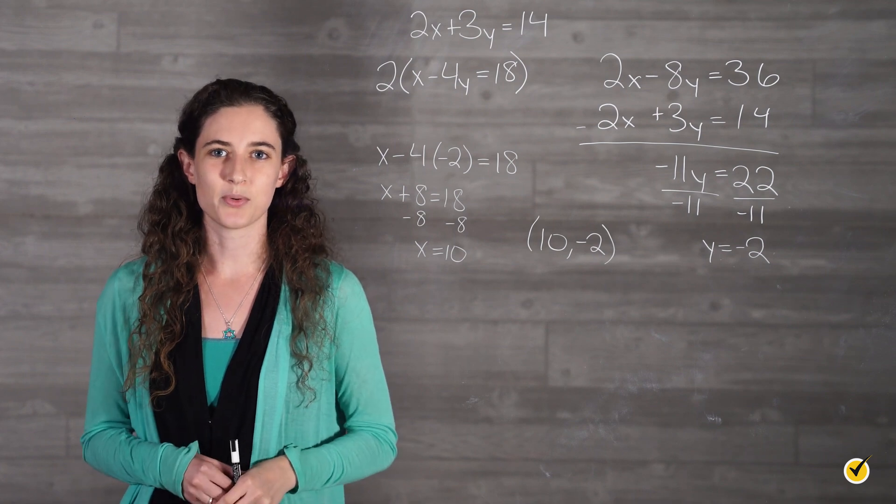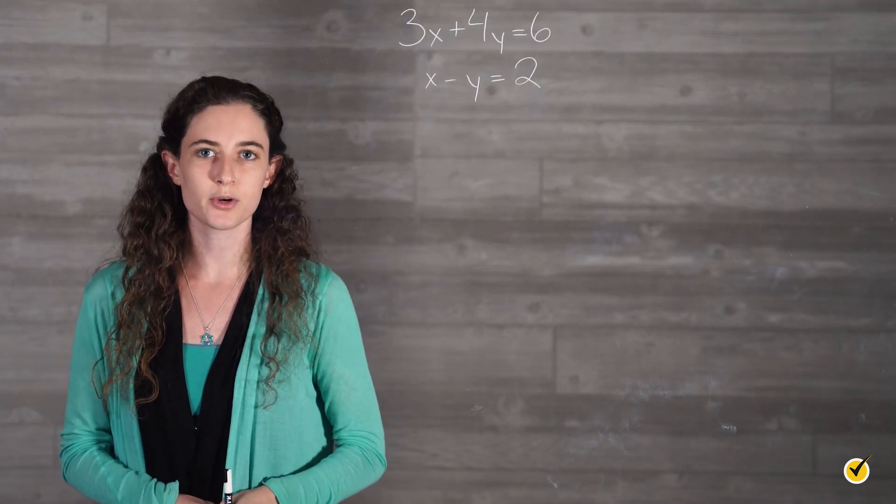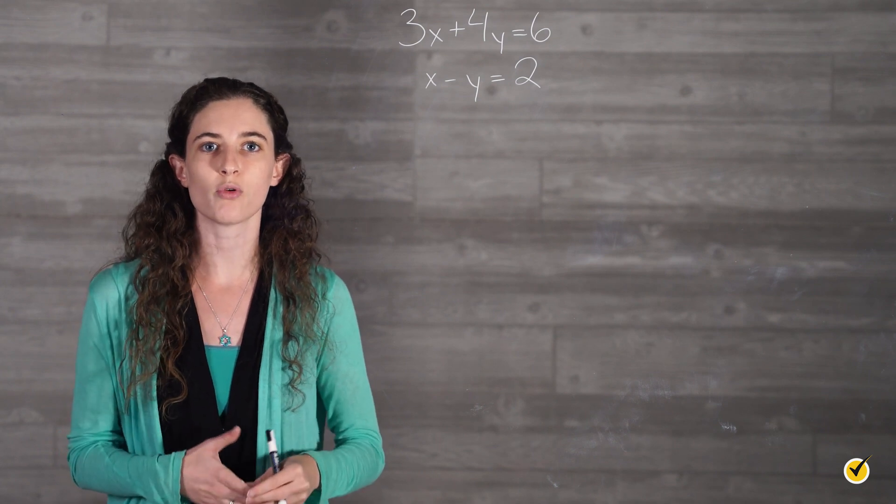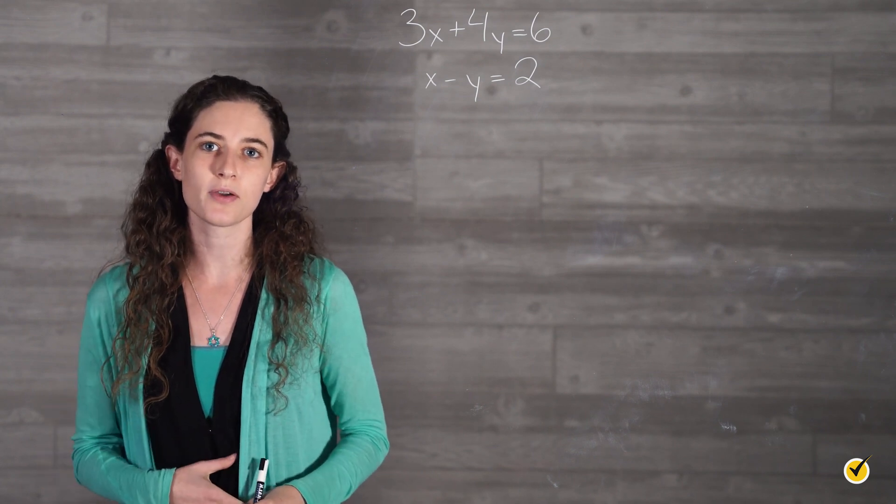Let's look at another example. For this example, we can multiply our bottom equation by either 3 or 4 to eliminate one of our terms. I am going to multiply by 4.